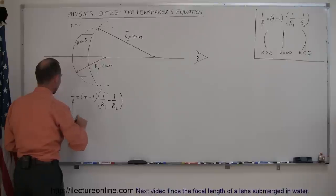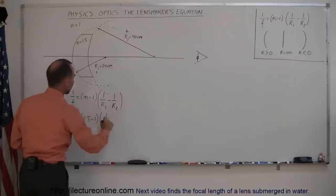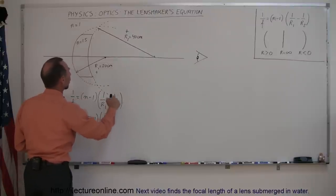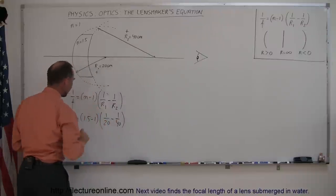we have 1 over f is equal to 1.5 minus 1 times 1 over r1, r1 is a positive 20 centimeters, minus 1 over r2, and r2 is a positive 40 centimeters.